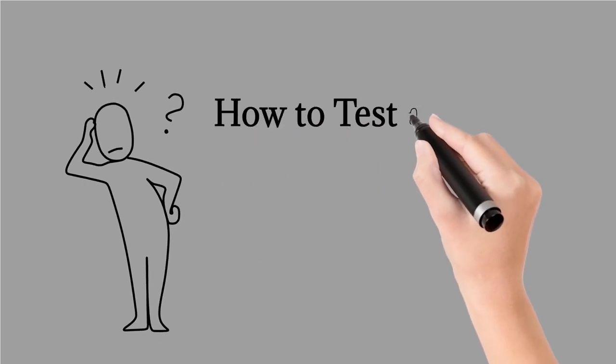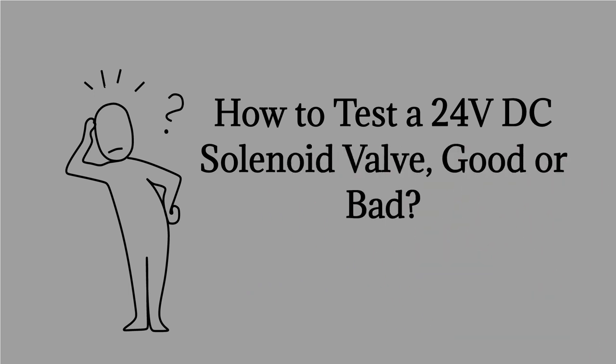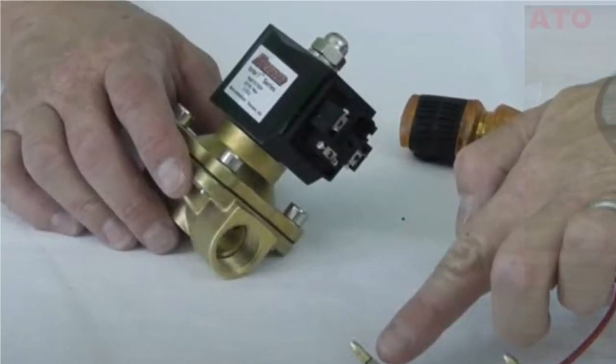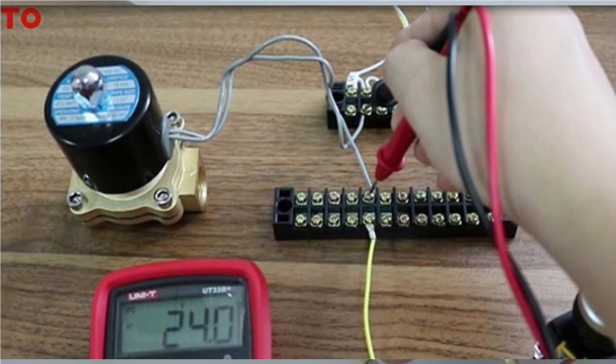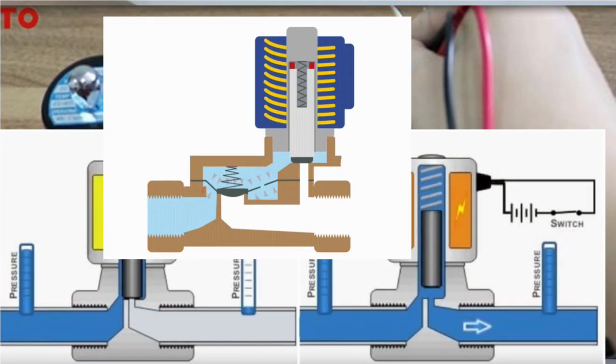In this video we will discuss how to test a 24 volts DC solenoid valve good or bad. The solenoid valve quality good or bad is decided by the coil in the valve. Therefore it mainly takes a test on these two parts to check if the solenoid valve is good or bad.